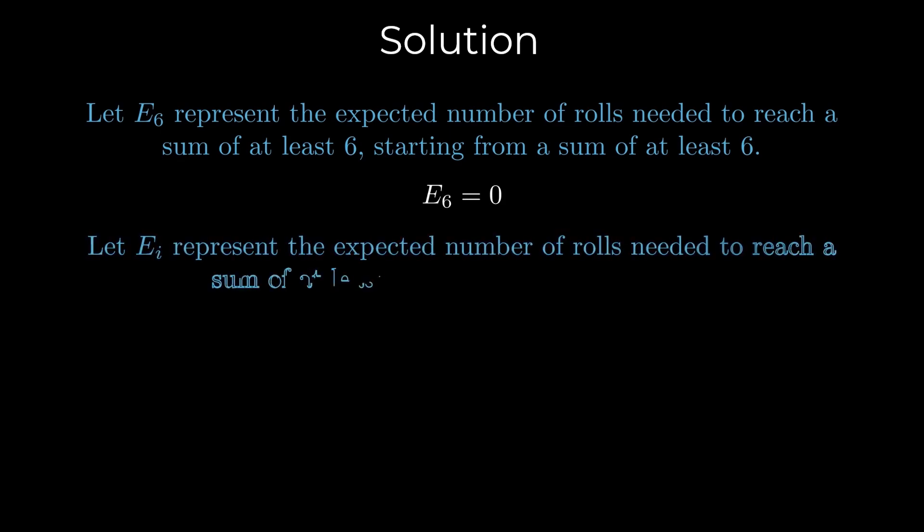Let EI represent the expected number of rolls needed to reach a sum of at least six, starting from a sum of I. E5 is one because if the current sum is five, any roll will bring the total to six or more.